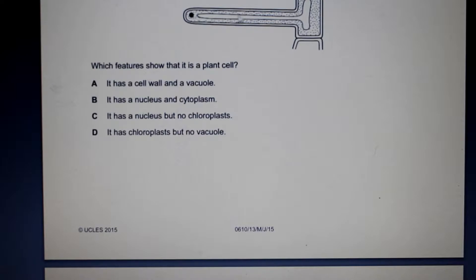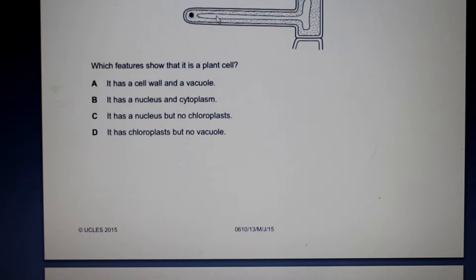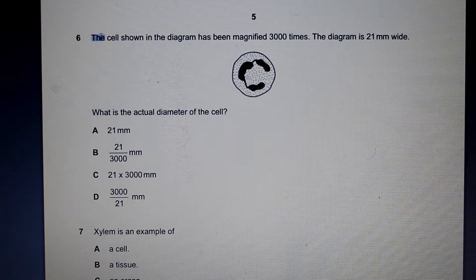The second feature we are looking for is the vacuole, which is also only found in plant cells and not in animal cells. This cell has a nucleus, cytoplasm, ribosomes, and a plasma membrane, but these are all also found in animal cells. So we are only looking for features found exclusively in plant cells — the cell wall and the vacuole — and that is our answer.